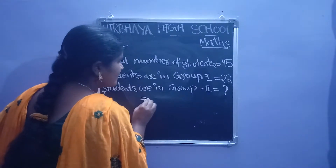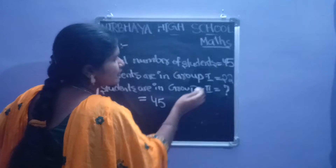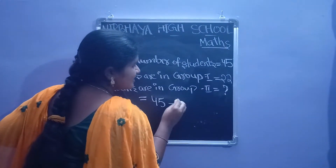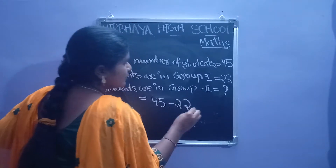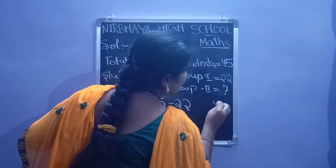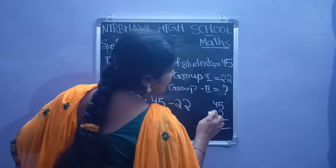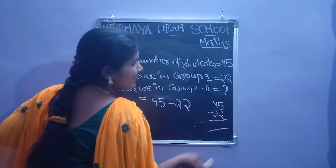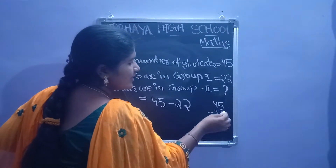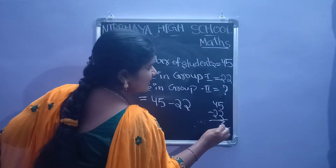Let's do the sum. Students in group 2 equals total number of students minus group 1: 45 minus 22. Let's do the subtraction, children. 5 minus 2 — draw 5 lines and remove 2 lines. Remaining: 3. Then 4 minus 2 — draw 4 lines, remove 2 lines.